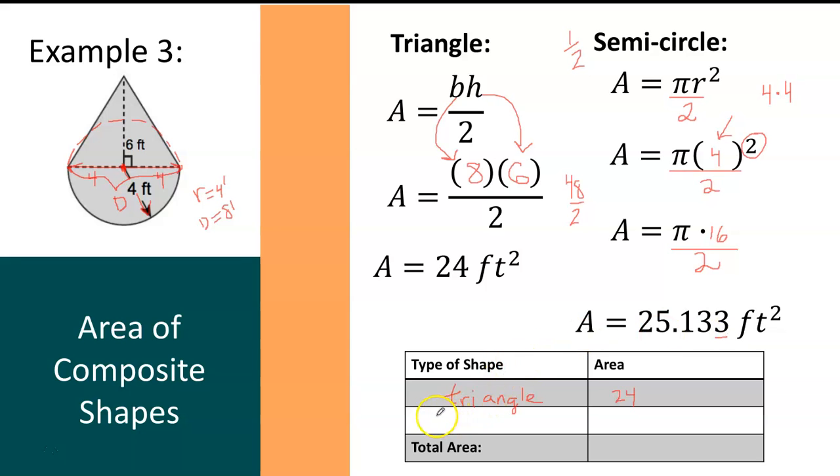So now, down here, I'm going to record the semicircle as the type of shape. So I'm just going to write half of a circle. And then I'll record in the area column the value 25.133 square feet.